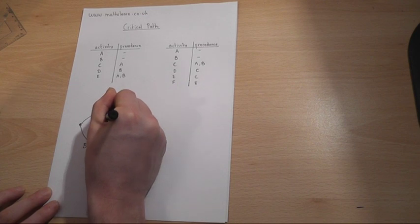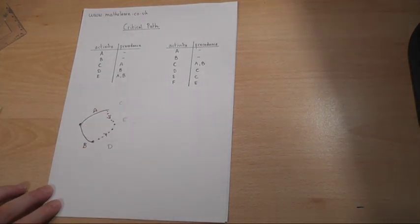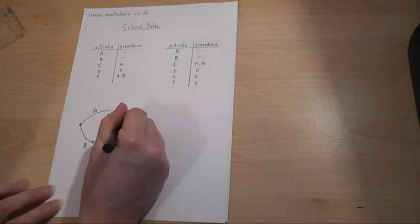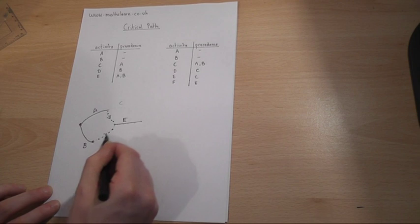Which we use with dotted lines, a theoretical extension of A and B to then allow activity E to take place after A and B.